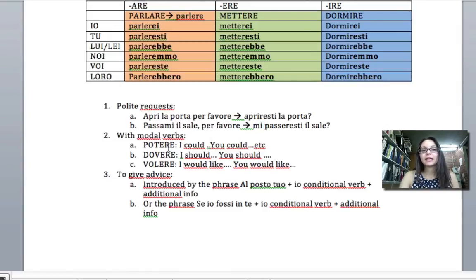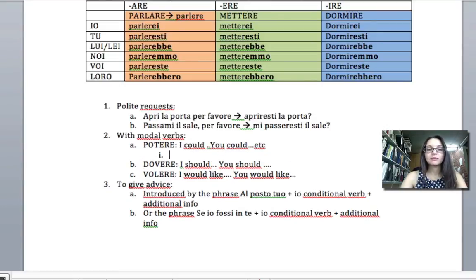With modal verbs we use the conditional for the following meanings. So with potere it translates to I could, you could, etc. And an example of that would be Potresti aprire la porta, could you open the door. So again it's a polite request.